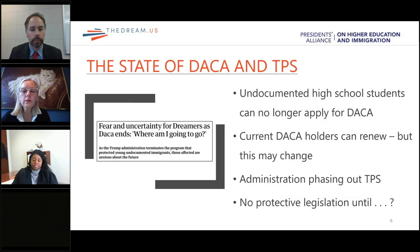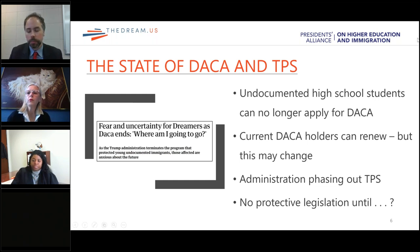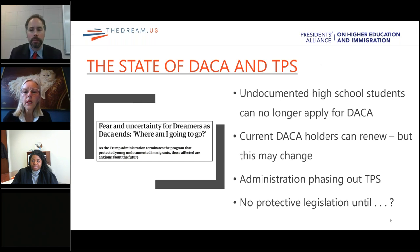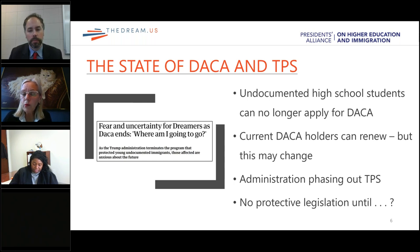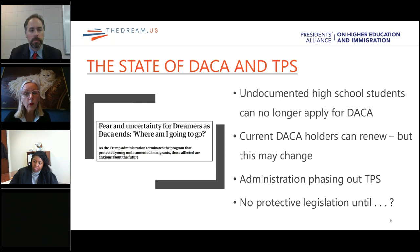I'm just going to quickly set the stage for both panel discussions by giving you a state of play for DREAMers. What you'll find here is a slide on DACA and TPS very quickly. Undocumented high school students can no longer apply for DACA. In September of 2017, the administration announced that it was ending DACA. At that point in time, students could no longer apply. The unfortunate circumstance is they do not have lawful presence — they could be deported at any time and are not able to work to support their families or afford their college education.